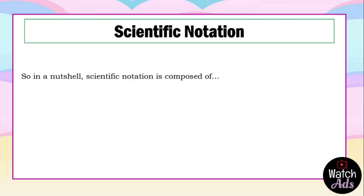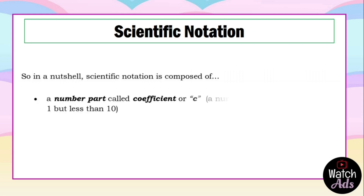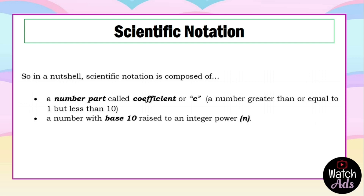So in a nutshell, scientific notation is composed of a number part called the coefficient or c — a number greater than or equal to 1 but less than 10 — and a number with base 10 raised to an integer power n.